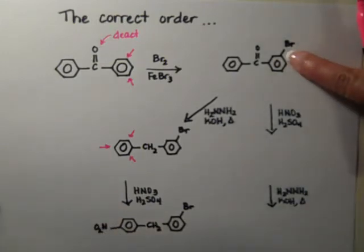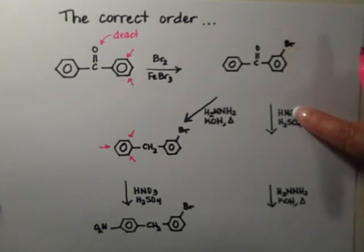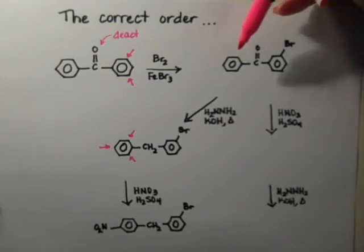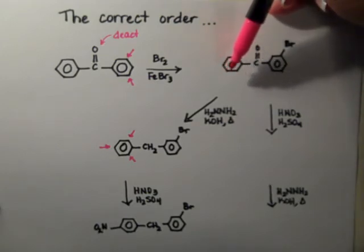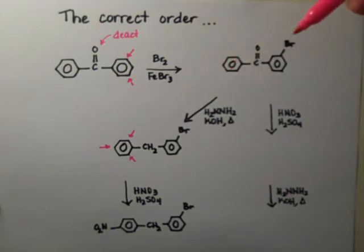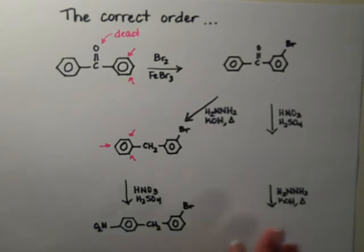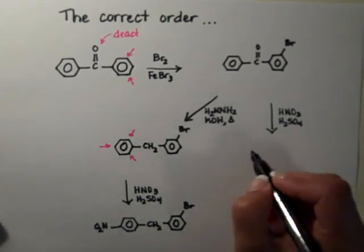If we go back to the carbonyl compound and now we do a nitration first, the nitro group again is going to go on the benzene ring that's on the left because this benzene ring on the left has only one deactivating group on. This one on the right has two deactivating groups on, so the ring on the left is going to be more active.